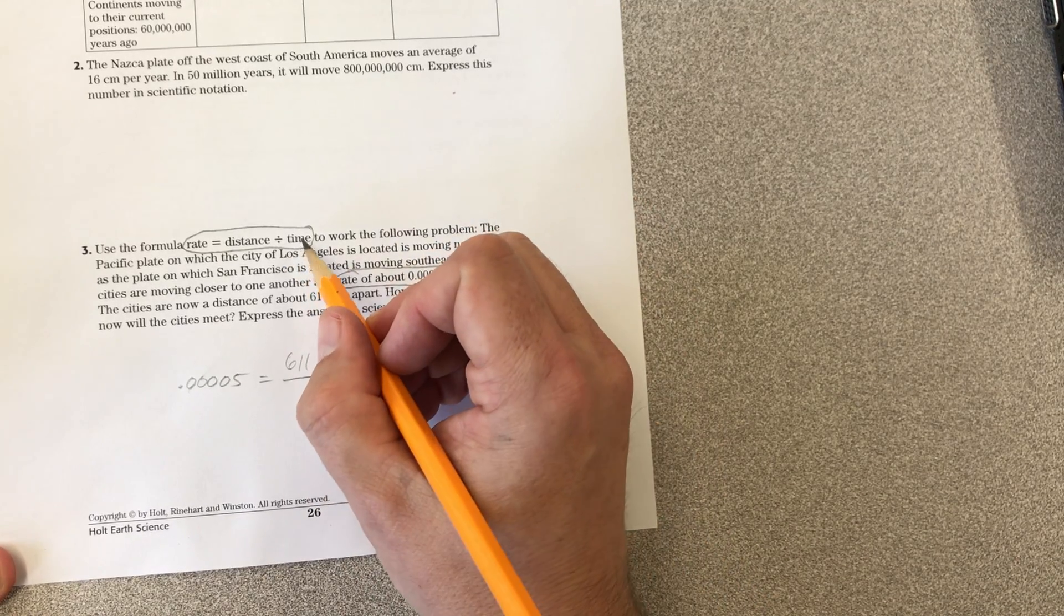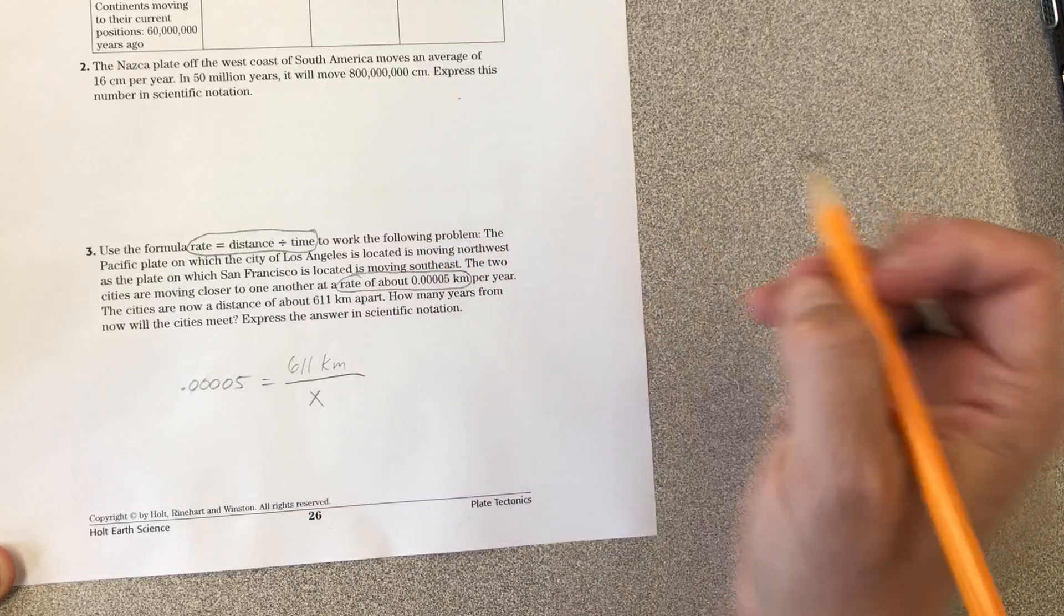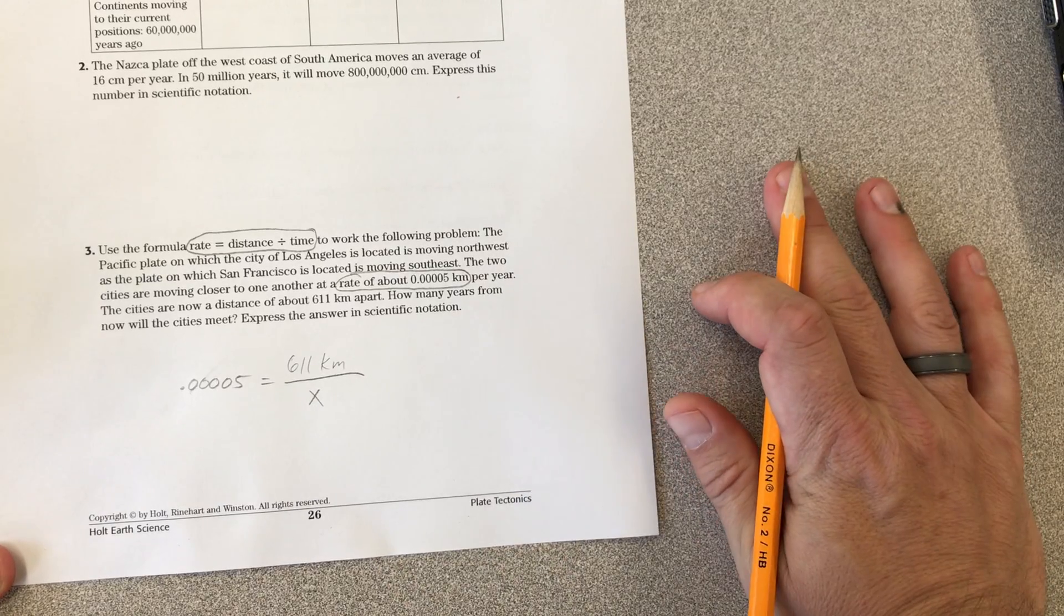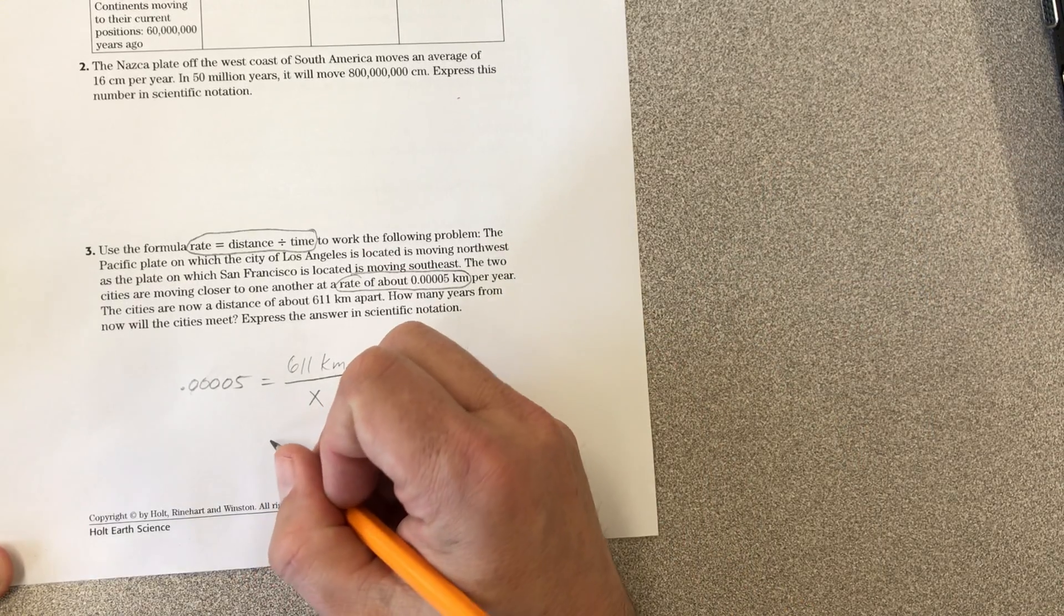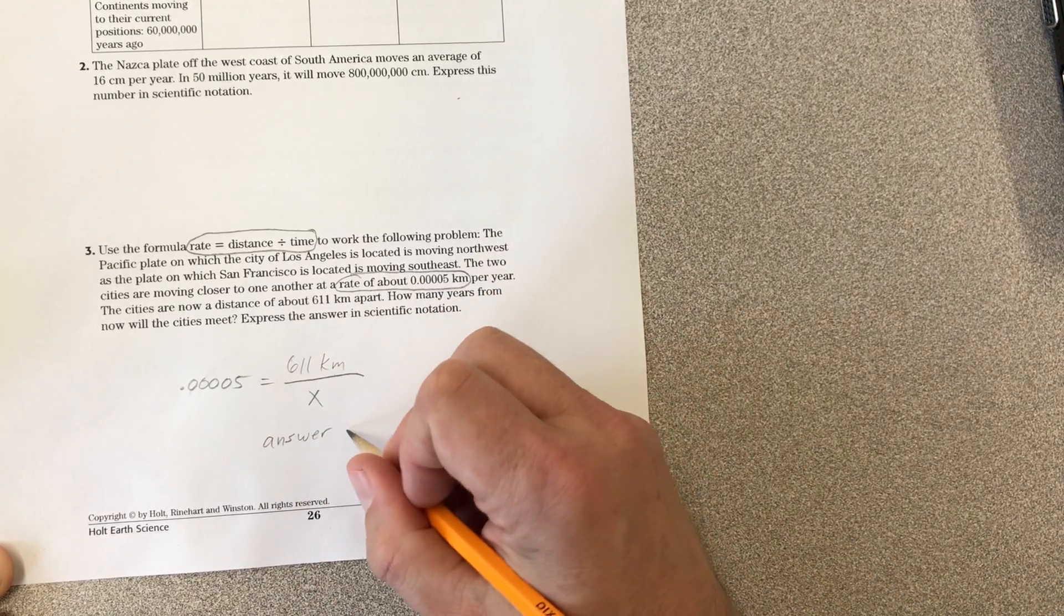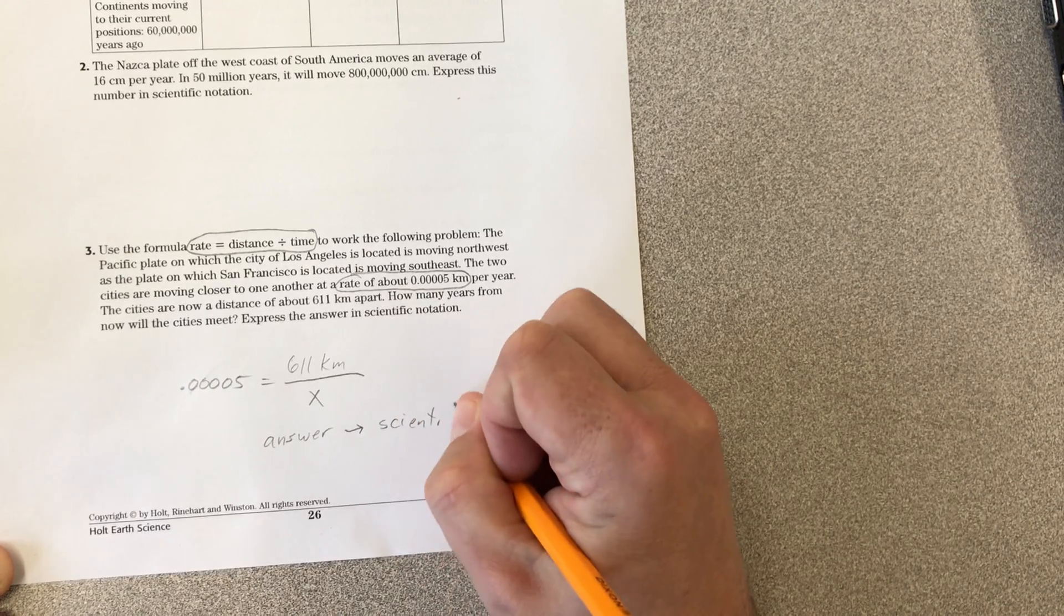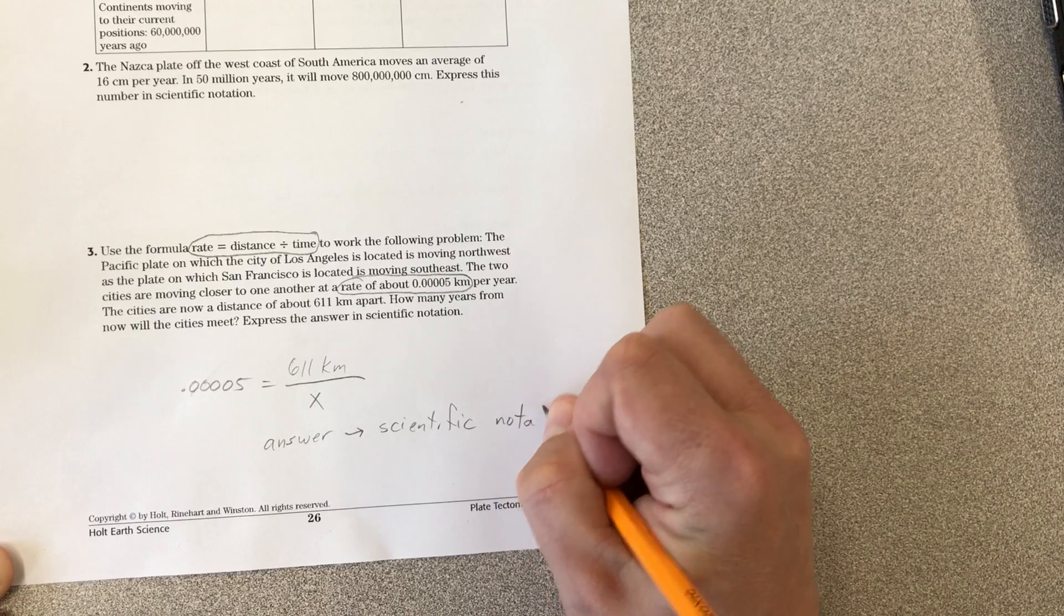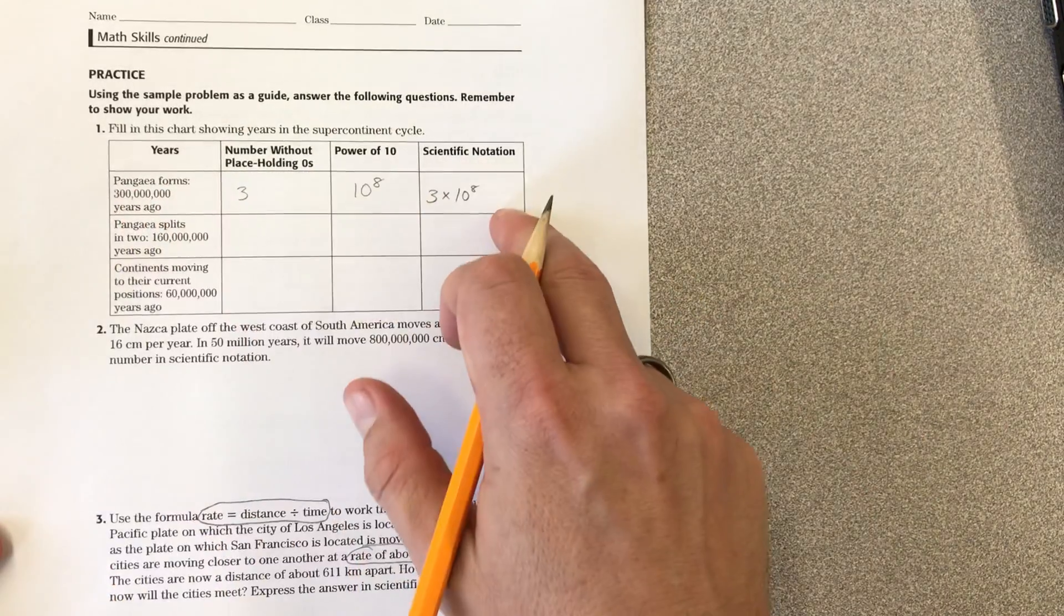The only thing we don't have is time. That's what we're looking for. So at this point it's just algebra. How do you find x? How do you solve for x? That'll be your answer. And then make sure your answer gets converted to scientific notation. So find the answer and then change it to scientific notation just like we did up here.